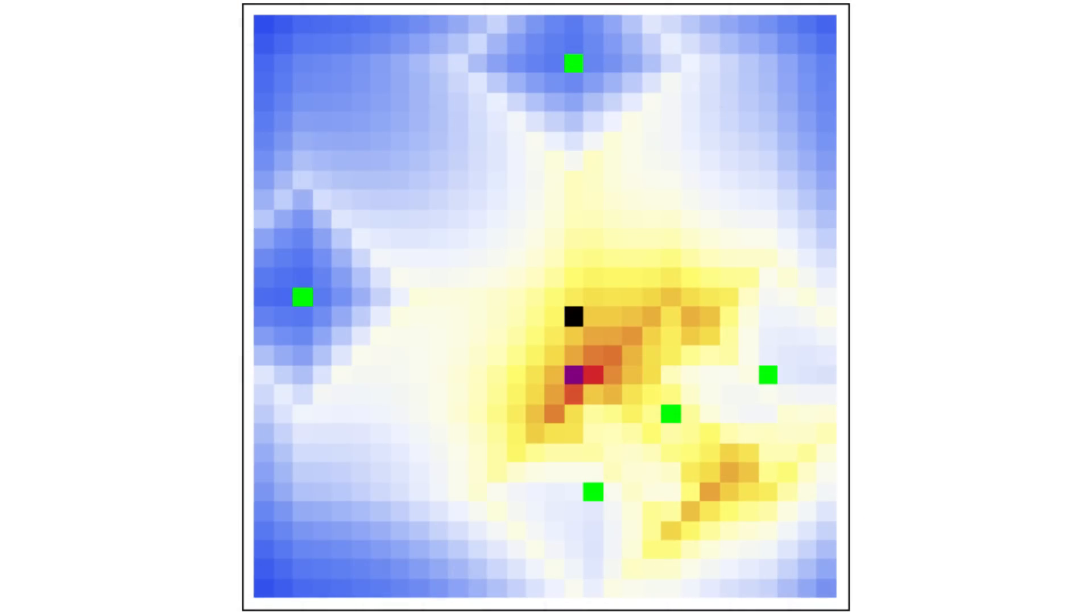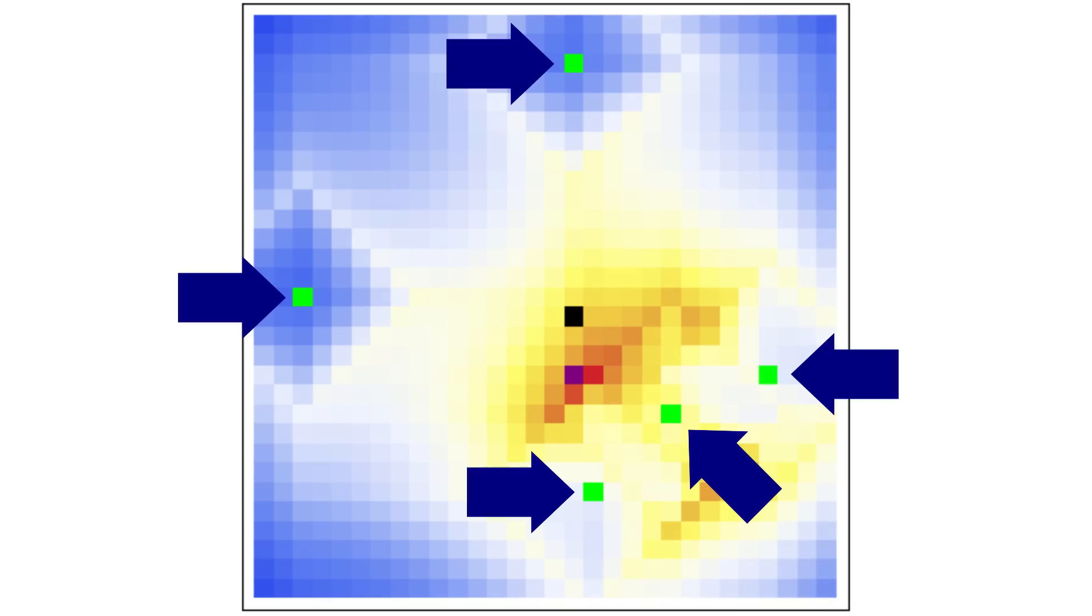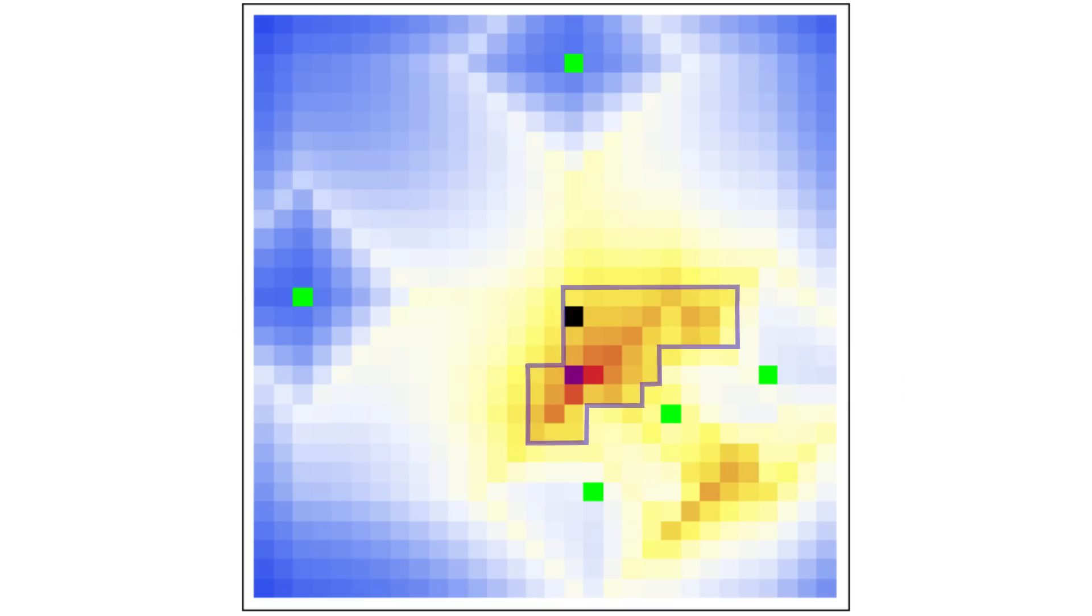What you're seeing here actually is the equation's output based on real crimes of a serial killer from the 70s named Richard Chase. You can see the crime locations in green, and the formula predicts his residence would be somewhere in this dark region. His actual residence is plotted here in purple, exactly as expected. So at least in this case, Rossmo's formula works.